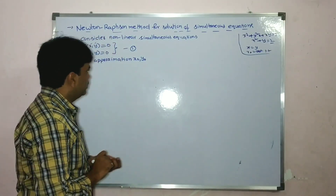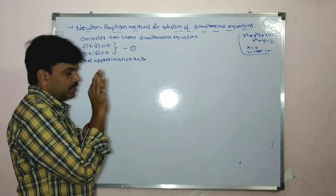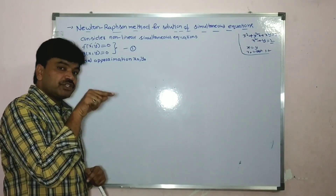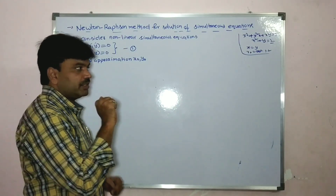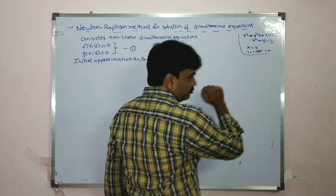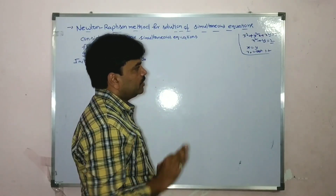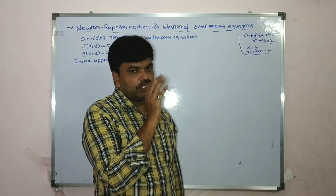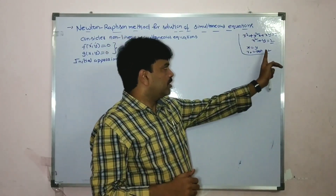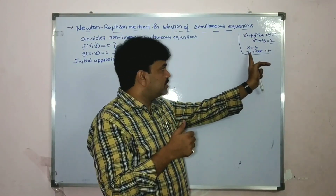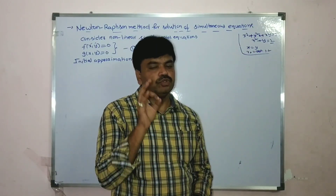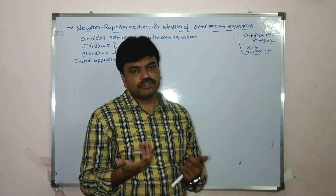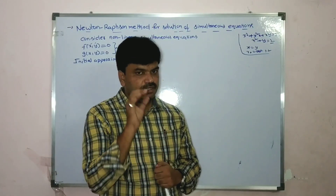Once again: sometimes x0 and y0 are mentioned in the problem — okay, you take that value. If not mentioned, take x equal to y, substitute either in equation 1 or 2, then you get x or y value. Suppose you got x value 1.2, so x0 and y0 equal to 1.2. That is the initial approximation — very, very important.